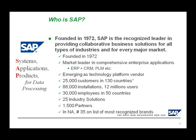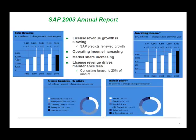SAP also has about 1,500 partners. These include other software companies that develop software alongside SAP, as well as consulting companies that sell and implement SAP software. There are about 1,500 partners in total.